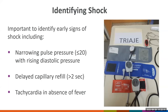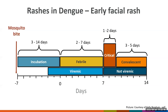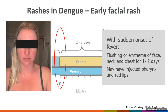Different types of rashes present in dengue patients and can help guide clinical suspicion. With the abrupt onset of fever, dengue patients can present with marked flushing of the face, neck, and chest. In this period, they can also present with red lips and injected pharynx, and sometimes patients are diagnosed as pharyngitis and just sent home.